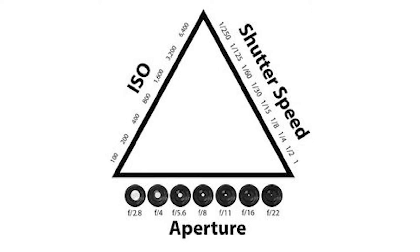You may have heard of the exposure triangle before, with aperture, ISO, and shutter speed on it. The difference between these three is as follows.